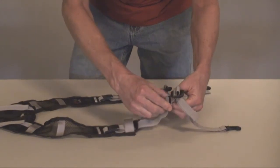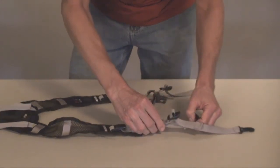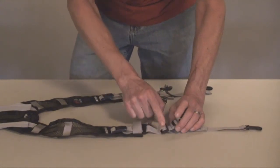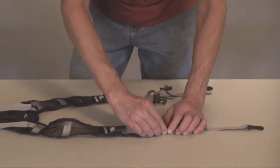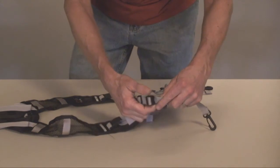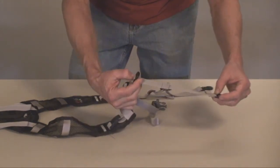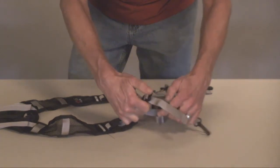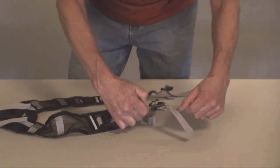For shorter people, or medium torsos, you want to pull it up to about like that. Once you adjust it where you need it, you pretty much leave this buckle where it is, and then you do micro adjustments with this buckle as you are using the pack during the day. This one you just lift up to adjust it, and then it'll self-lock when you pull it.